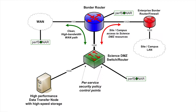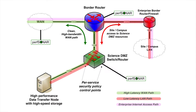If we look at this, the minimum diagram contains the wide area network, a border router, a Science DMZ switch/router, and a data transfer node. The path from the wide area to the data transfer node comes in via the border router, down through the Science DMZ switch/router, and into the DTN.